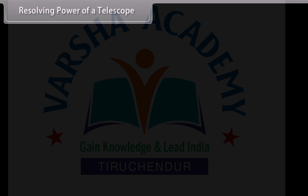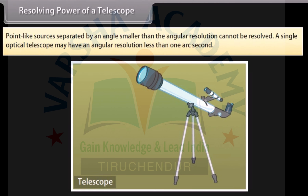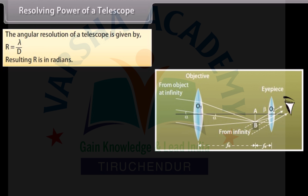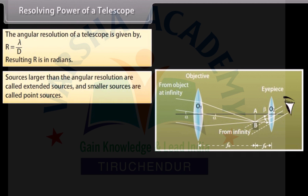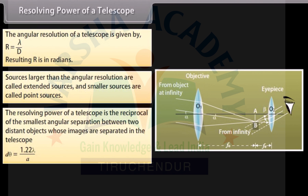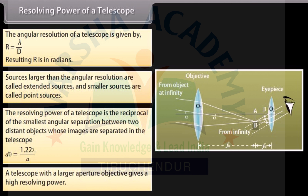Resolving power of a telescope. Point-like sources separated by an angle smaller than the angular resolution cannot be resolved. A single optical telescope may have an angular resolution less than one arc second. The angular resolution of a telescope is given by R = λ/d, where lambda is the wavelength of the observed radiation and d is the diameter of the telescope's objective. Resulting R is in radians. Sources larger than the angular resolution are called extended sources and smaller sources are called point sources. The resolving power of a telescope is the reciprocal of the smallest angular separation between two distant objects whose images are separated in the telescope. D·theta = 1.22λ/A. A telescope with a larger aperture objective gives a higher resolving power.